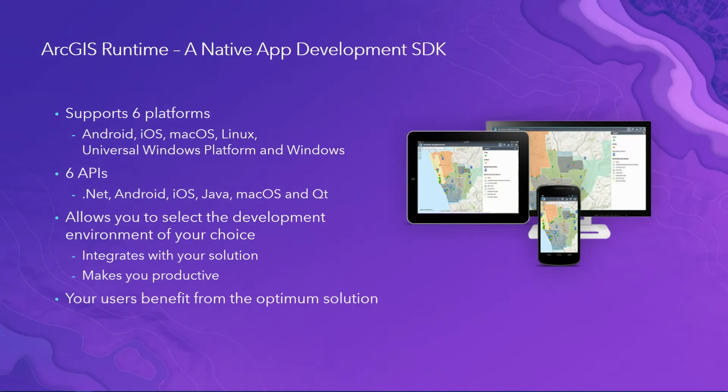When it comes to native application development with ArcGIS, we have the runtime. We support six platforms with six APIs. Three of these are cross-platform. That's a tremendous investment we've made in our developer technology for native applications development. And the reason we do that is we allow you to pick the API — not us — so that you can pick it based on your experience or the framework that you're trying to integrate with. But you get to make that decision.